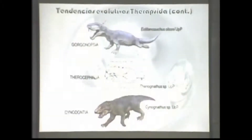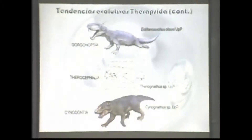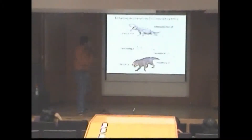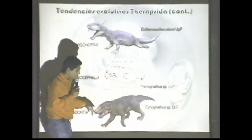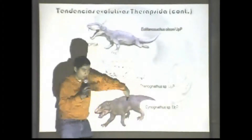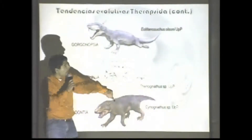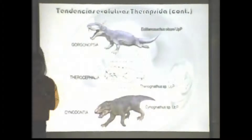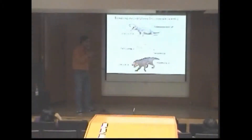Después evolucionan otros grupos, siendo el más importante el de los sinodontes, porque es la línea evolutiva que dará origen a los mamíferos. Dentro del grupo de los gorgonosmidos evolucionan los sinápsidos más grandes de todos, con una altura de 1.70 a 1.80 metros a la altura de la cruz. La cruz es donde convergen los miembros con el eje de la columna vertebral; puesto a cuatro patas, este animal llegaba aproximadamente a esa altura, siendo un titán bastante grande para la época.